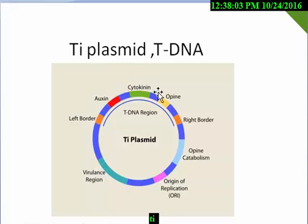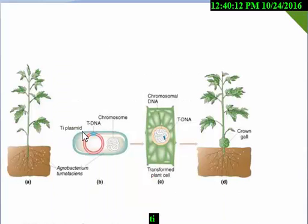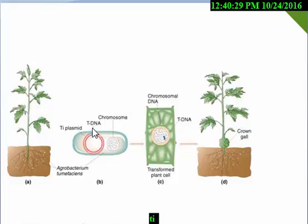In a bacterium there is a chromosome, and within that bacterium this vector — the Ti plasmid, or tumor inducing plasmid — is found. Now we will learn the mechanism of crown gall disease. You can see that Agrobacterium tumefaciens is found in the soil near a normal plant. Inside the agrobacterium there is a chromosome, the Ti plasmid, and the T-DNA.